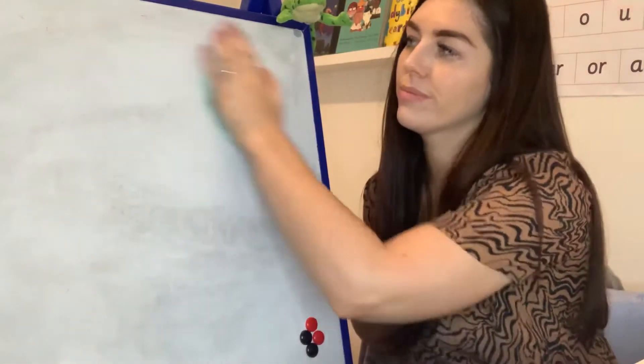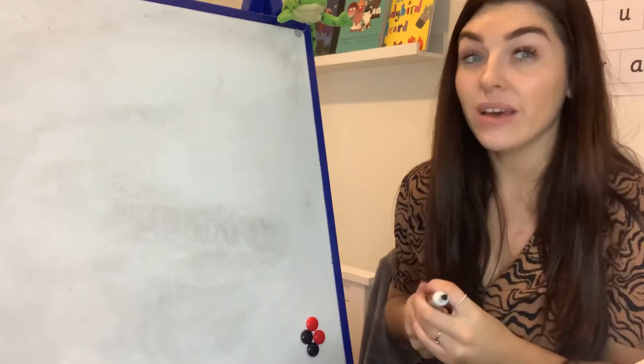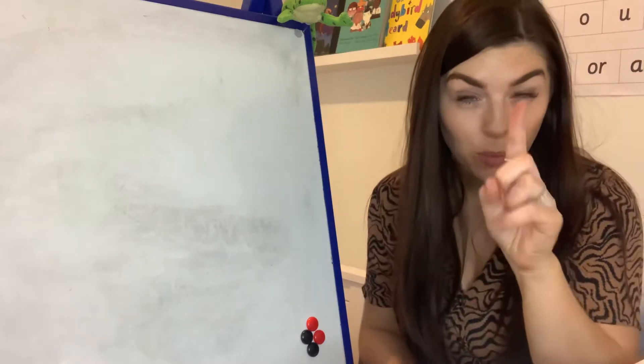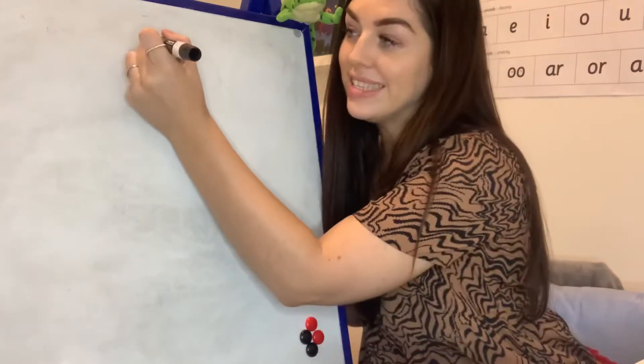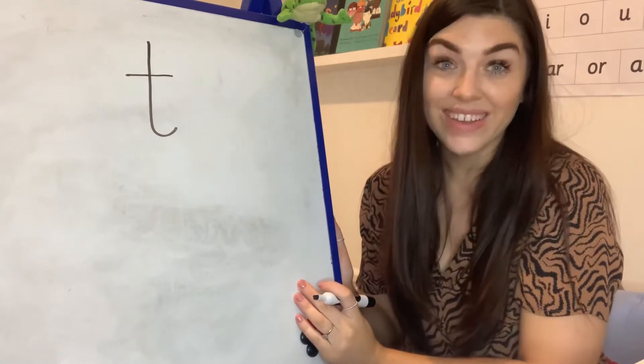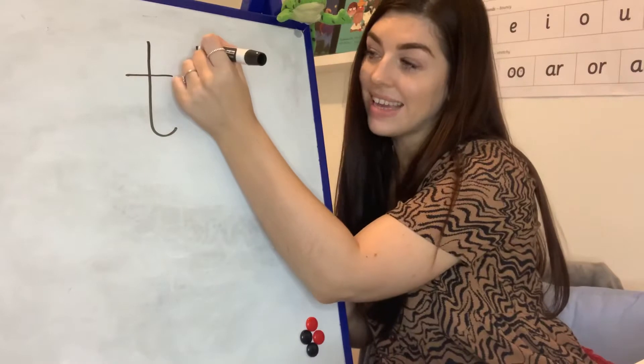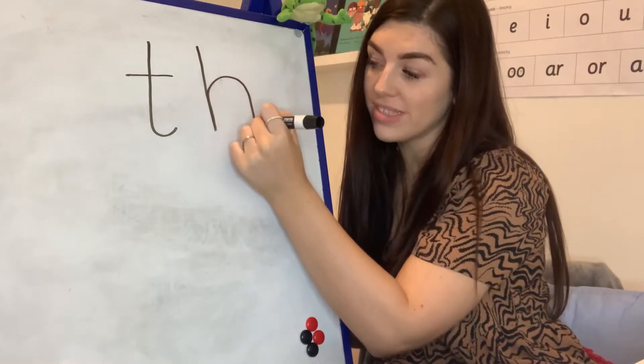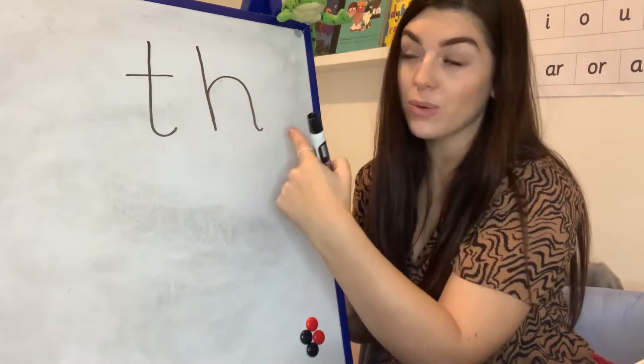So watch me first. To make the th sound we need two letters. Two letters that make one sound. The first letter is t. Down the tower, across the tower. The second letter is h. And we go down his head to the hooves and over the horse's back. Down the head to the hooves and over the horse's back.